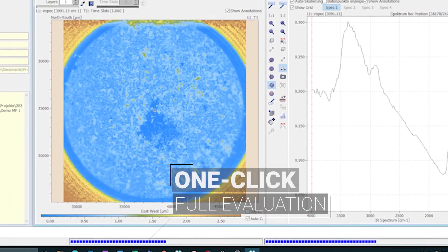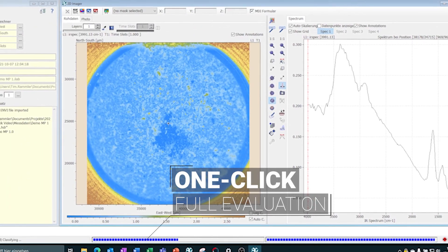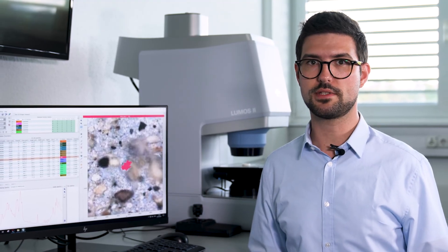With just one click, you get a full evaluation of all the particles on the filter. If you're working in analytical service, your customers will love your reports. The combination of a one-button analysis tool like Purency's microplastics finder and a true imaging solution like the Lumos II is a future-proof method for everybody.